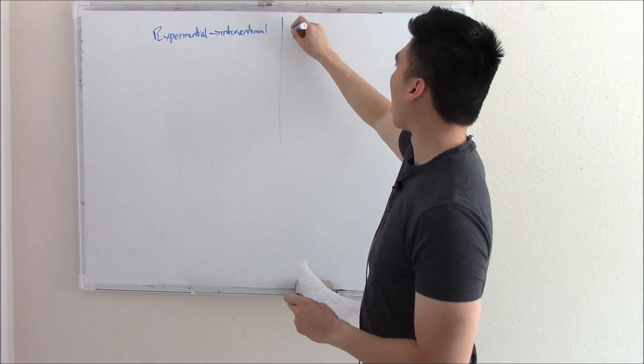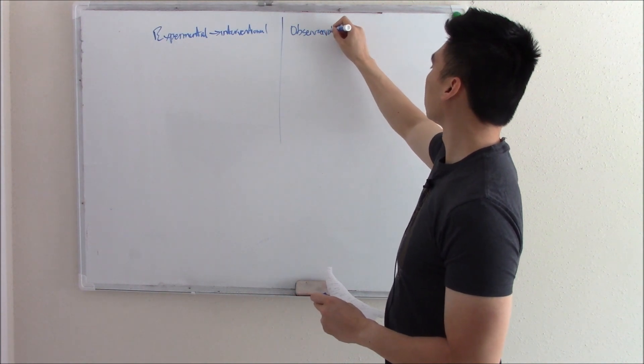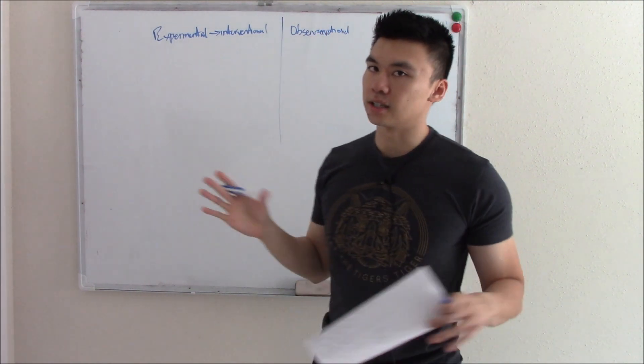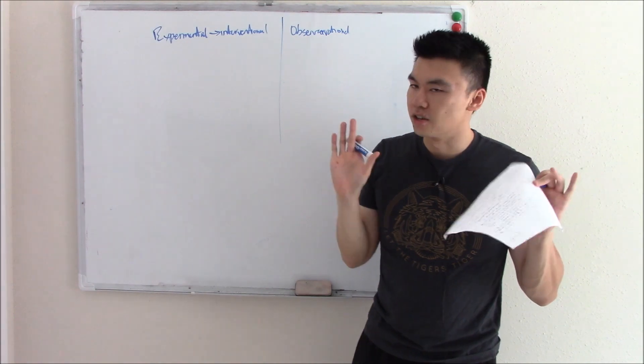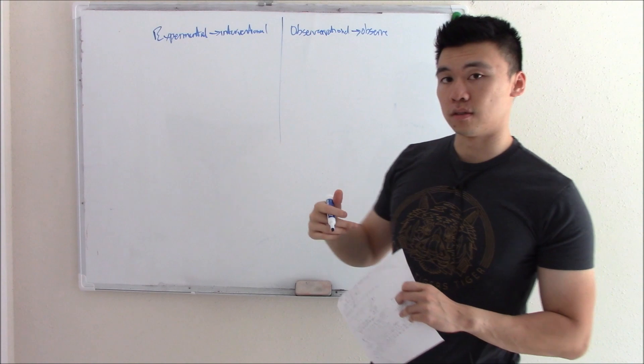The second group of research we call observational. Here you're just watching, you're just observing. You're not doing anything. So you just observe. We'll talk about observational first.